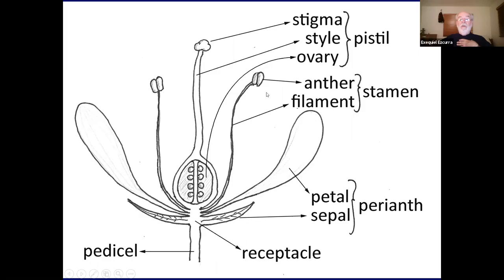Then you have a third whorl of highly transformed bracts — basically the stamens with the anthers and the filaments. And then a central structure, maybe one or many, that is basically the pistil or pistils, which has the ovules in the lower part — the ovary. The ovary is basically a closed receptacle, like an urn, that contains the ovules inside. Then it has a style and the stigma.